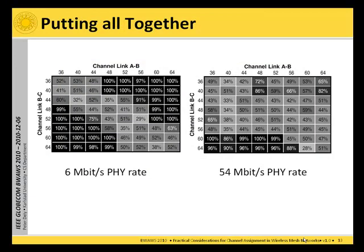So what happens if we put it all together? We use the same experimental setup as before and measure the aggregate throughput for the network on different combinations of channels. We did that for different physical layer rates; here I show the results for 6 Mbps and 54 Mbps physical layer rate.